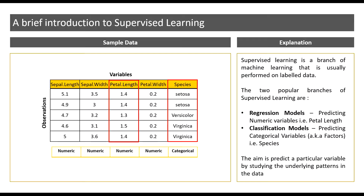The other sub-branch of supervised learning is classification models. Predicting a categorical variable such as species, which is already highlighted here, is an example of classification models. So generally, to conclude, we can say that when we predict a particular variable by understanding the underlying patterns in the data, it falls under supervised learning.